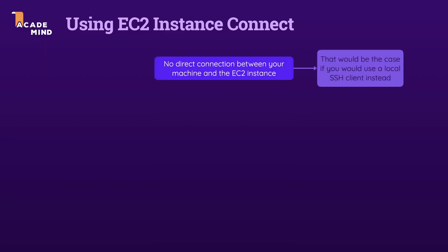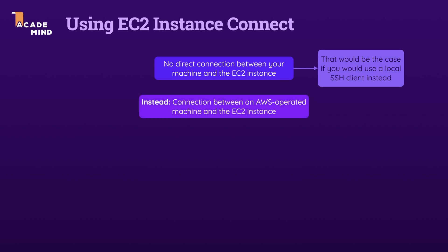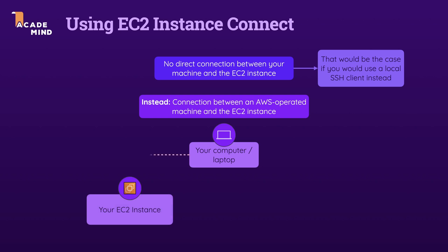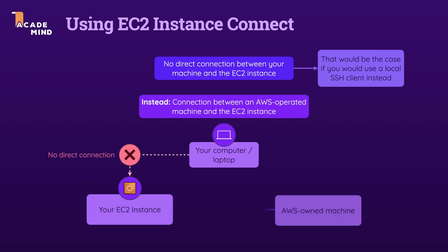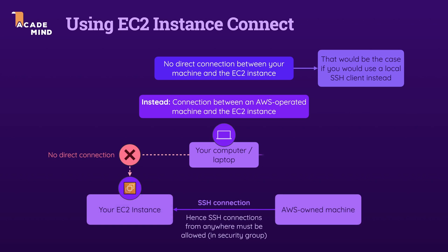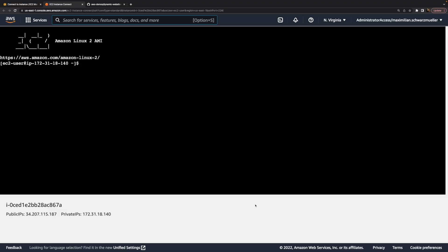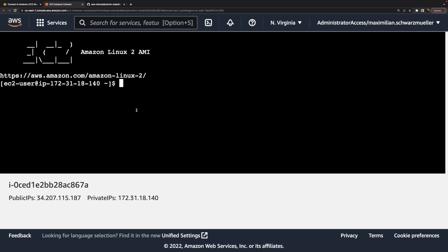Technically, the connection is not between our local computer and the instance, but between one of AWS's computers in their data centers and our instance. Since we're connected to the AWS cloud through the management console, AWS gives us access to that terminal session, which it established between its computer and the instance, through the browser. So here we have this terminal and we can run commands which will execute on our virtual EC2 instance.